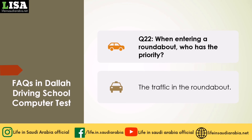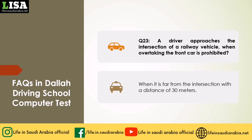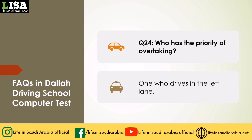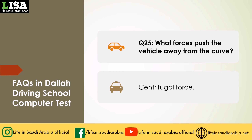Q22: When entering a roundabout, who has the priority? Answer: The traffic in the roundabout. Q23: A driver approaches the intersection of a railway vehicle — when is overtaking the front car prohibited? Answer: When it is within 30 meters of the intersection. Q24: Who has the priority of overtaking? Answer: One who drives in the left lane. Q25: What forces push the vehicle away from the curve? Answer: Centrifugal force.